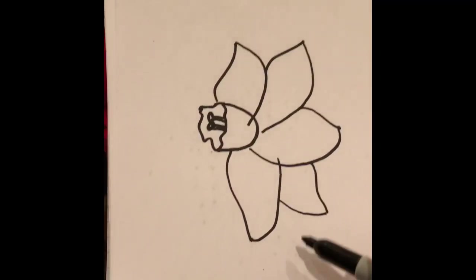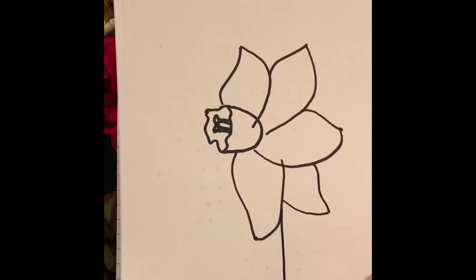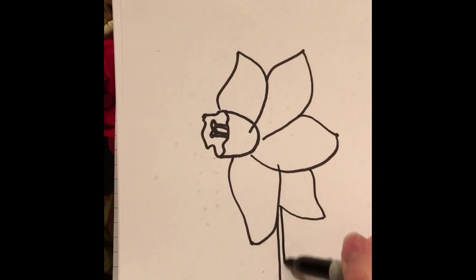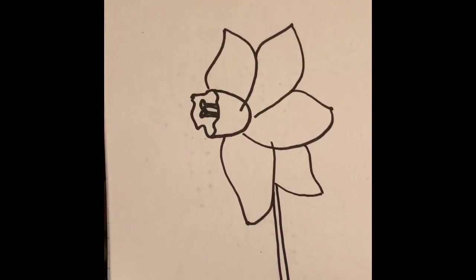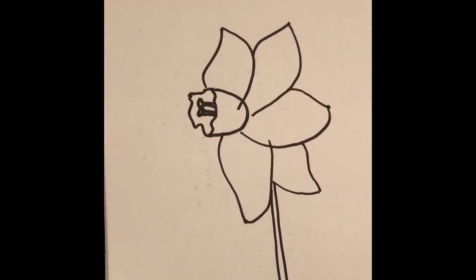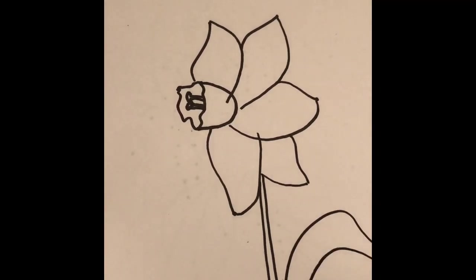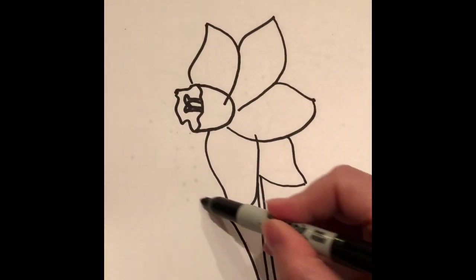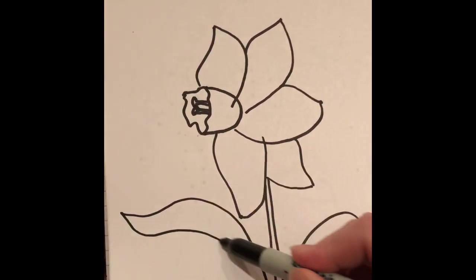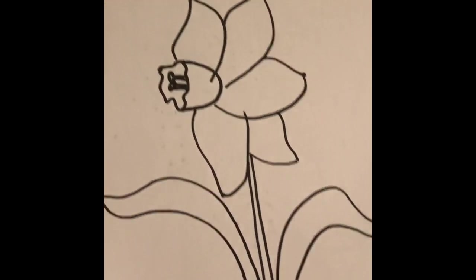Then we can add our stem. So I'm just going to make two lines straight down for my stem. And then I can add some daffodil leaves which are very large and curvy like this. And come out and make my curvy leaves.